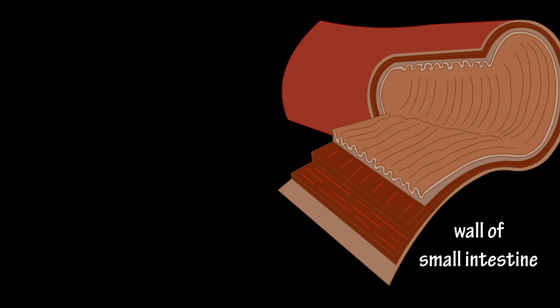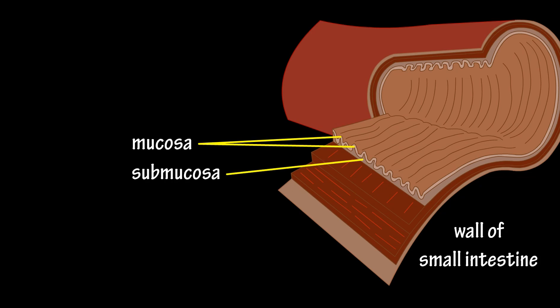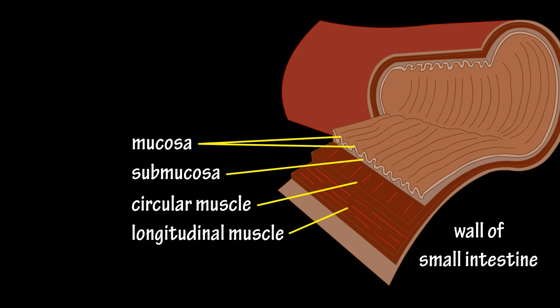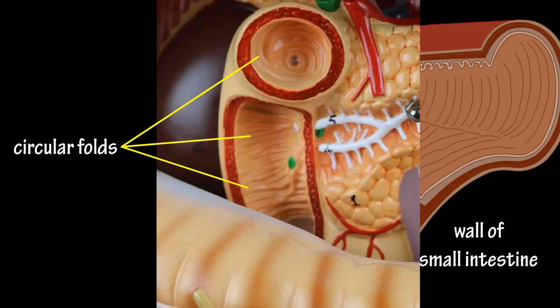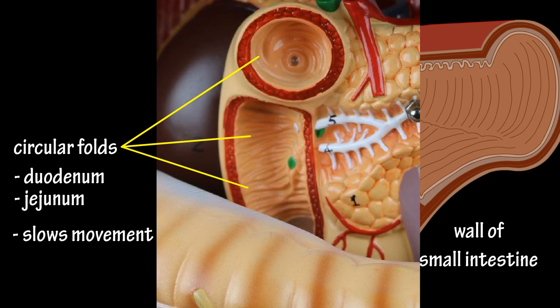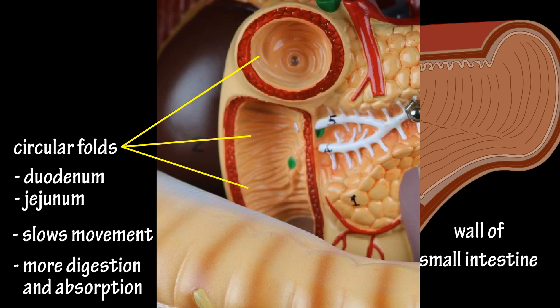The wall of the small intestine is comprised of a mucosa or mucous membrane, a submucosa, a layer of circular muscle, a layer of longitudinal muscle, and a serosa. The mucosa and submucosa have internal circular folds, as you can see here in this photo of the duodenum. These folds are more numerous in the duodenum and jejunum, and they increase the surface area, which slows down the movement of materials from the stomach and also provides for more nutrient digestion and absorption.